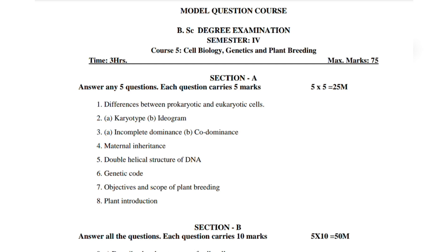In the short questions section, choose second and third - select either (a) or (b). Second (a) and second (b) are both manageable. For karyotype, two and a half marks are allotted. Prepare accordingly, and for third (b) refer to that topic as well.